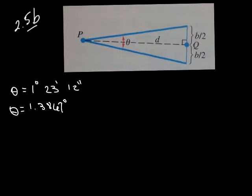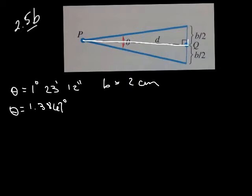They also tell you that b is going to be 2 centimeters — not very big at all, not even an inch. So this length here is not even an inch long. What we're interested in is finding d, so we're going to look at one triangle, because we're only looking for d.